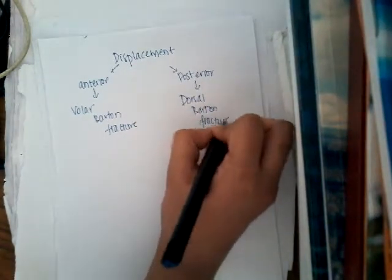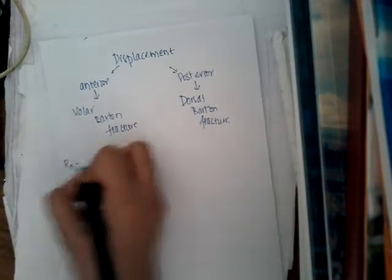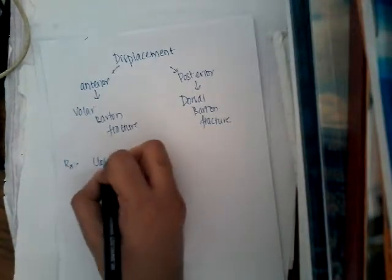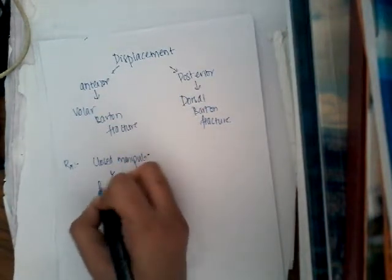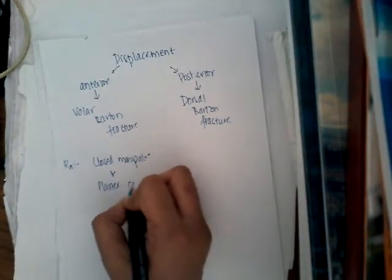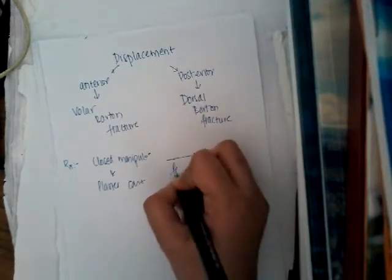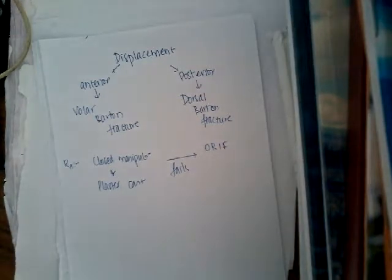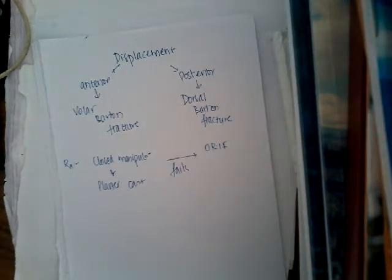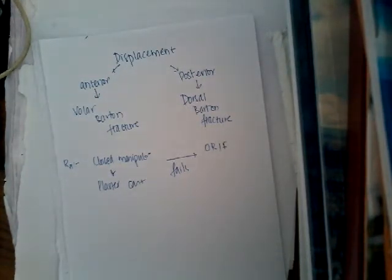How are you going to treat this Barton's fracture? The treatment is: first, you will do closed manipulation and put a plaster cast. If this fails, then you will do open reduction and internal fixation. If there is no displacement or even if there is displacement, you will try to do manipulation and put a plaster cast. If that does not succeed, then you will have to do open reduction and internal fixation. This is about Barton's fracture. Thank you for watching my lecture.